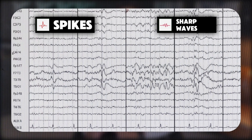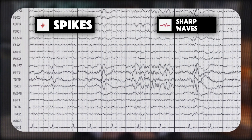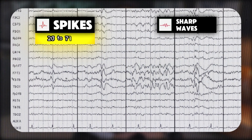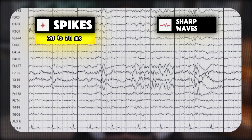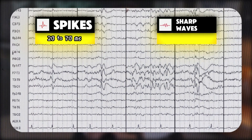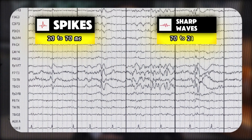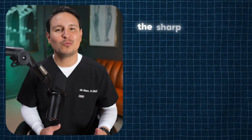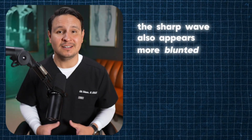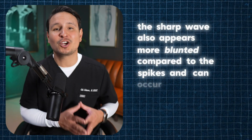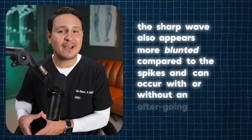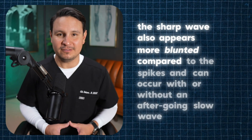Spikes and sharp waves are defined by their duration. A spike typically lasts between 20 to 70 milliseconds, while a sharp wave is slightly longer, lasting between 70 to 200 milliseconds. The sharp wave also appears more blunted compared to the spike and can occur with or without an aftergoing slow wave.